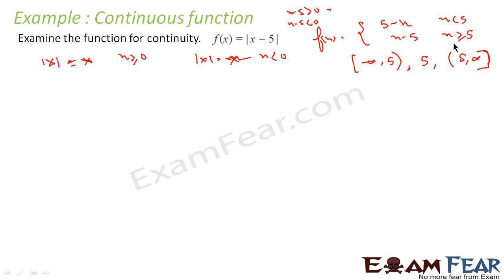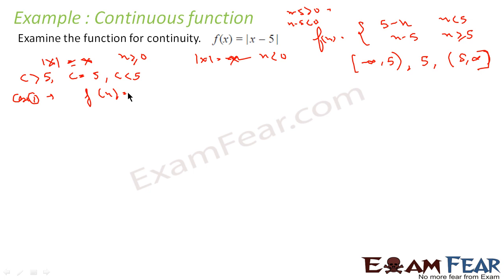So I have three cases: c > 5, c = 5, and c < 5. Let's take Case 1: c > 5. My f(x) becomes x - 5, which is a polynomial function. And just now I proved that polynomial functions are continuous. So this function is continuous for c > 5.